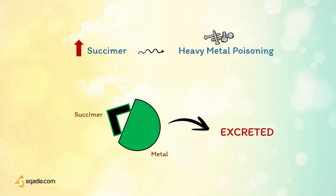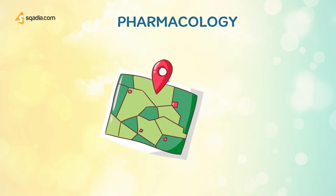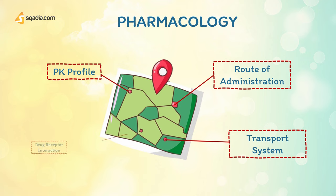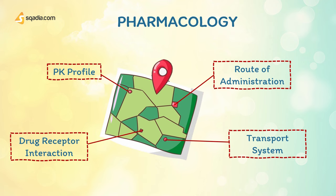For this reason, these drugs must be given in much higher doses than more specific drugs. Now that you have some understanding of pharmacology in general, let us move toward the technical aspects. Using the map analogy from the start, in our introduction we will be covering four destinations: route of administration, PK profile, transport systems, and drug-receptor interaction.